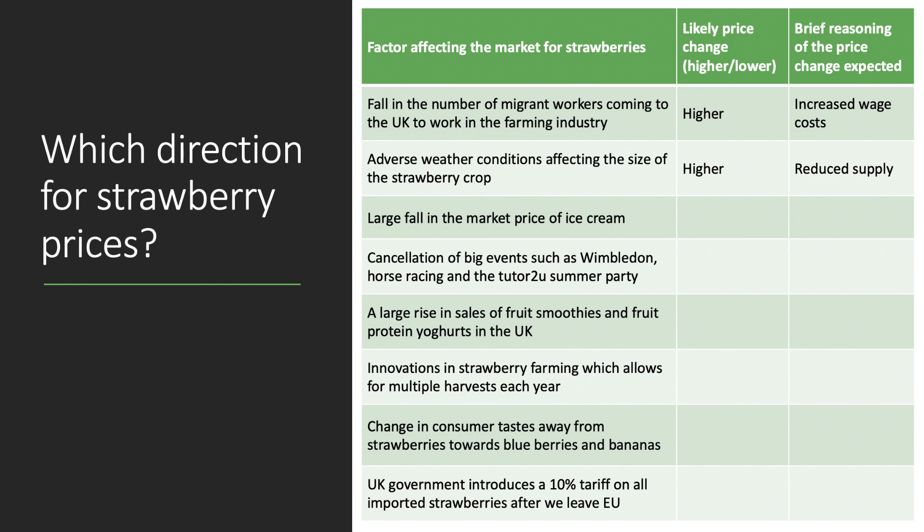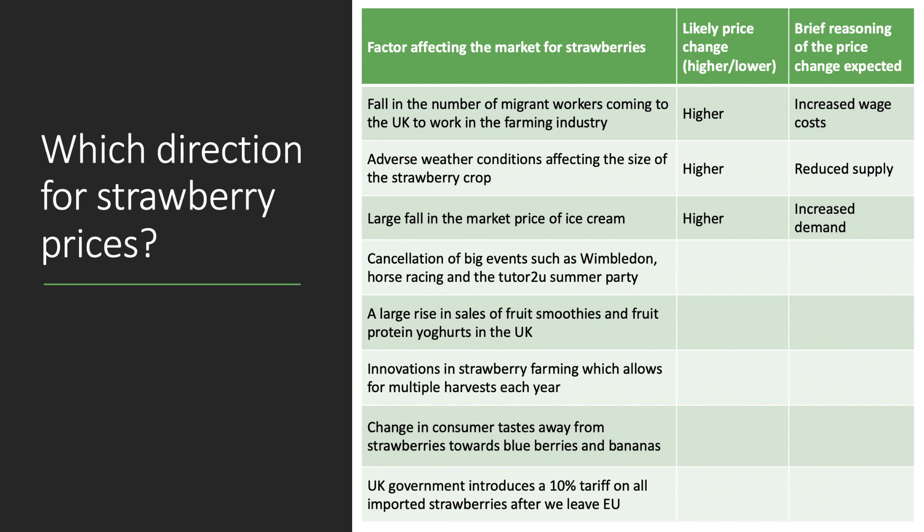Factor three: a large fall in the market price of ice cream. What would happen to the price of strawberries if there's a price war in the ice cream market? We think the price of strawberries would probably go up. The main reason is increased demand, because ice cream and strawberries are close complements. If the price of ice cream goes down, people buy more ice cream and more strawberries, so demand rises relative to supply and the price goes up.